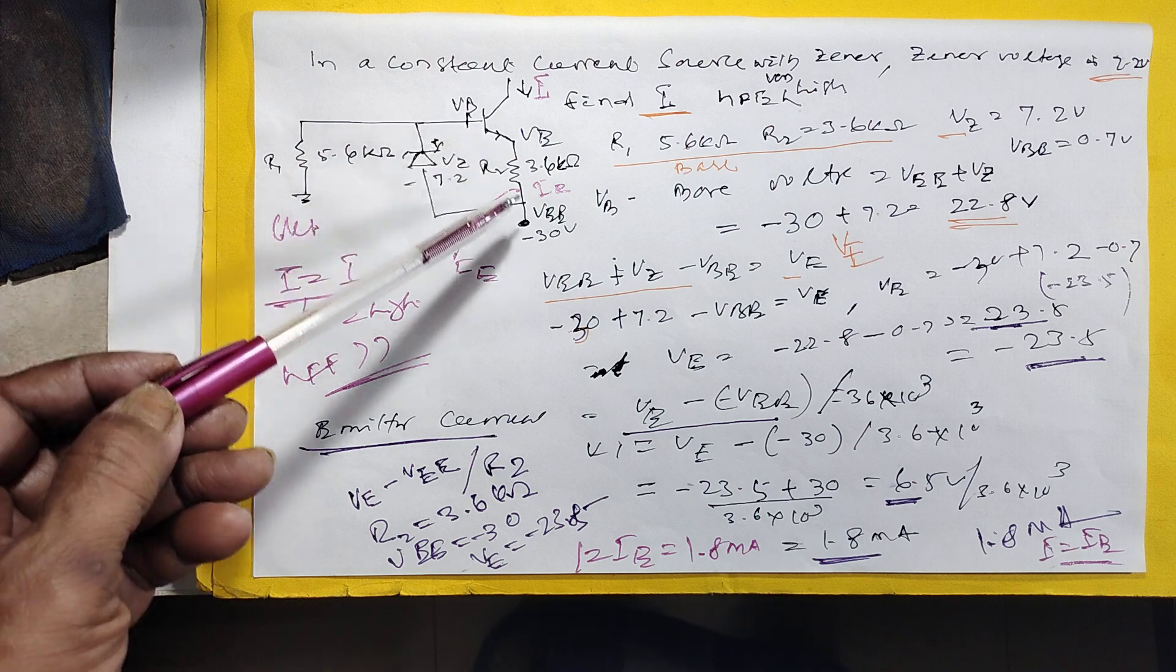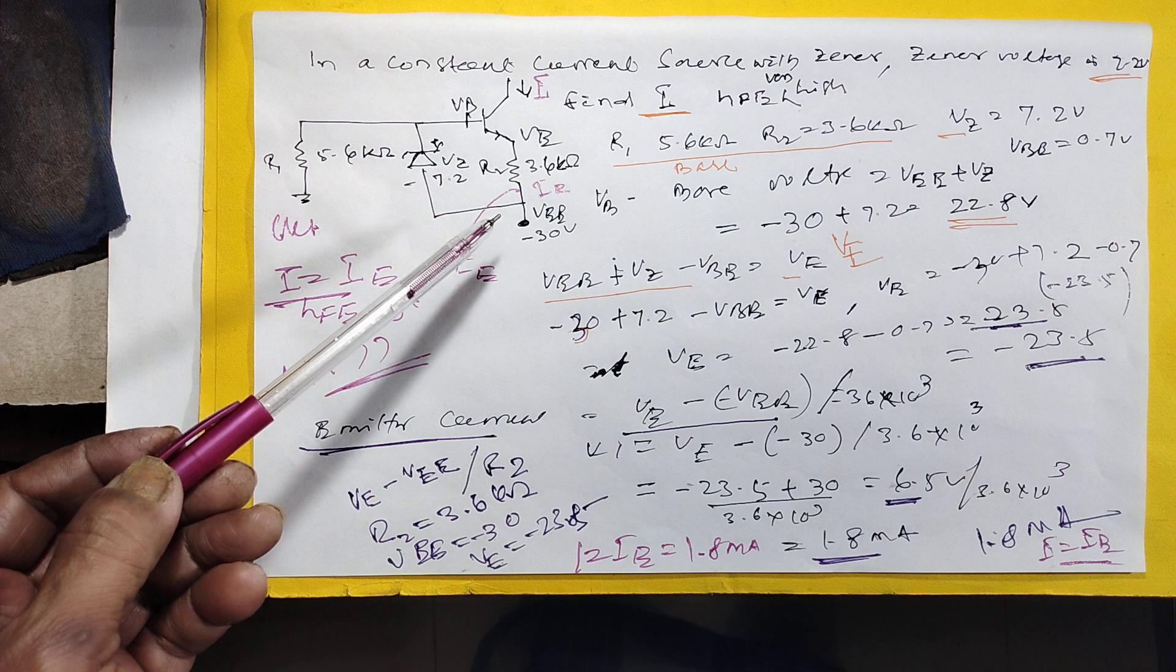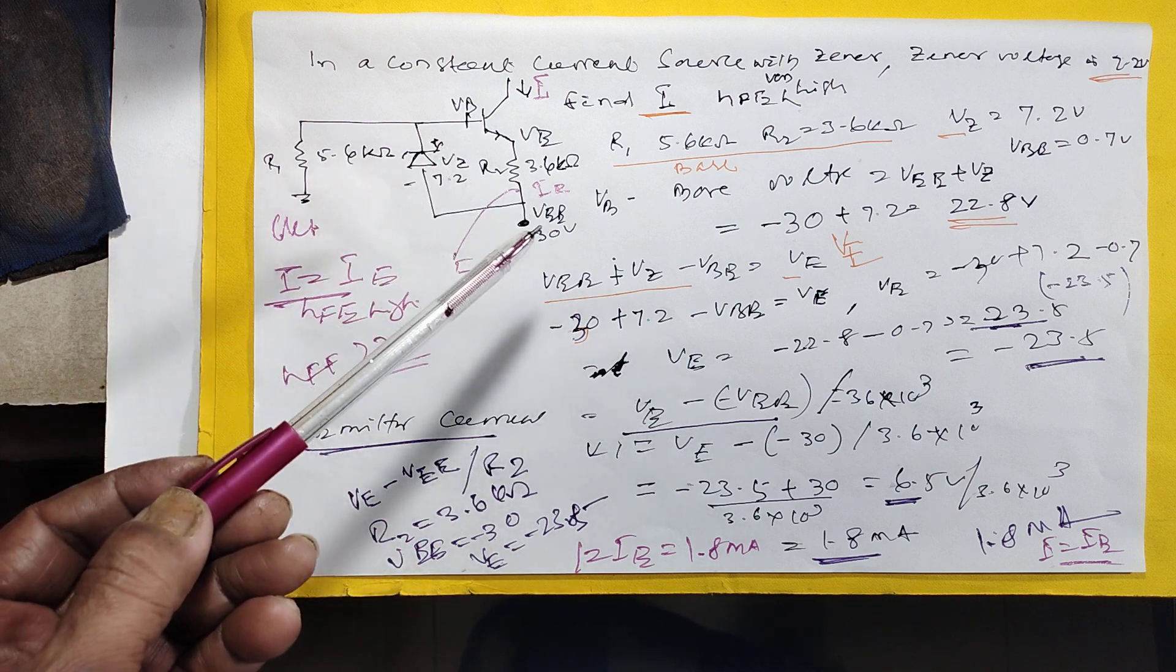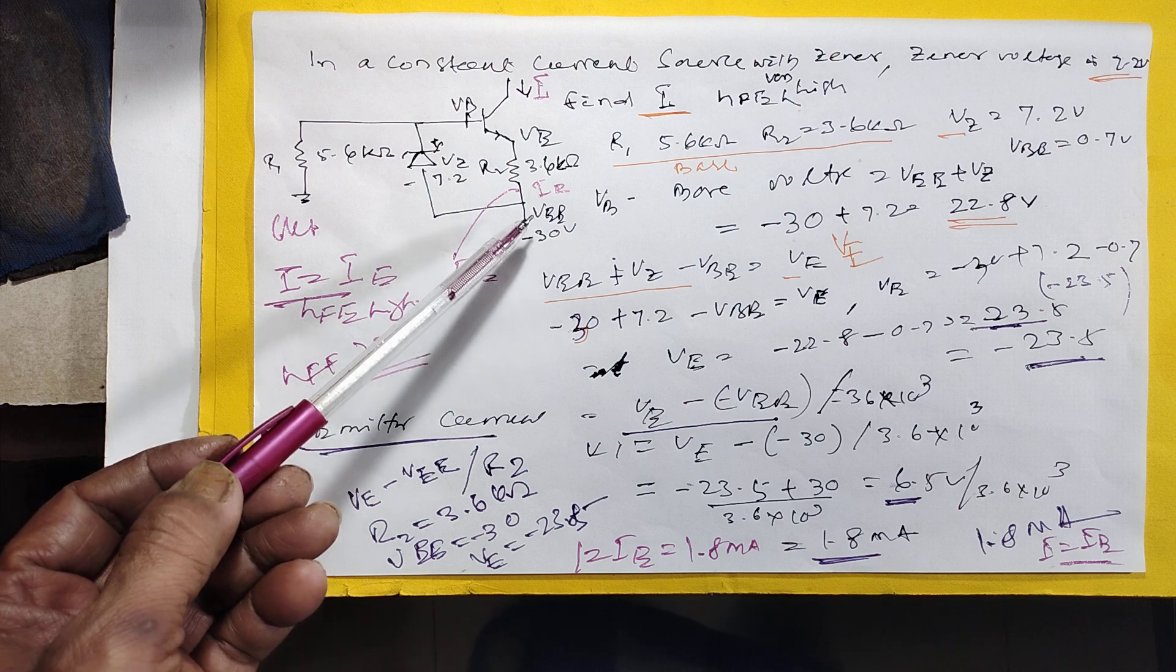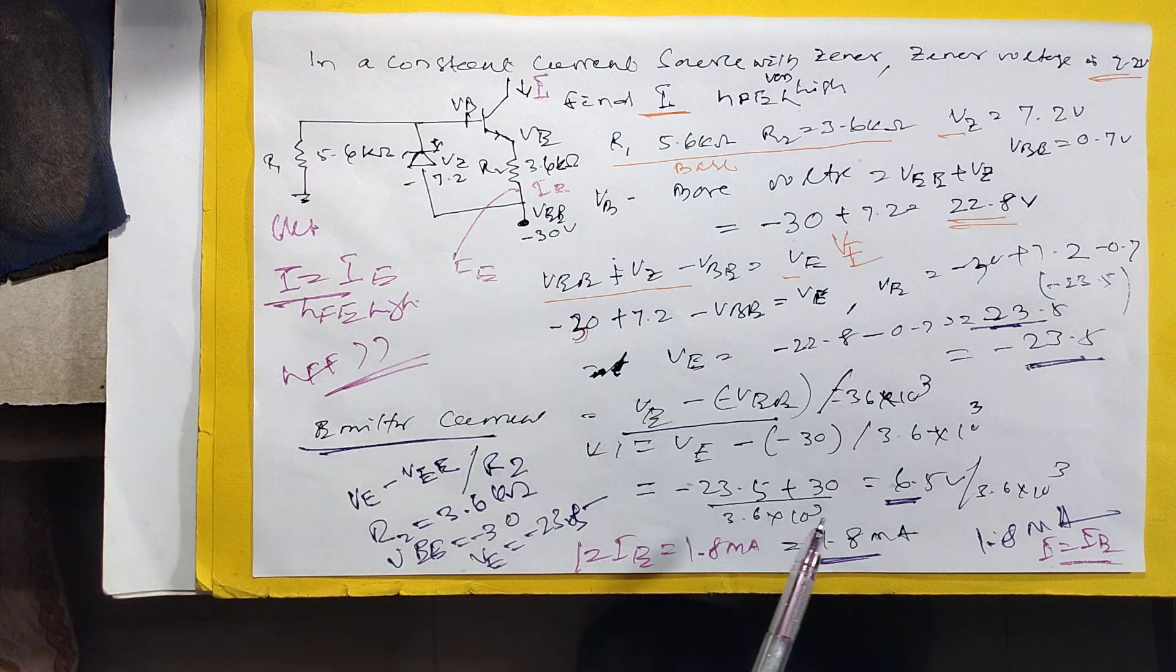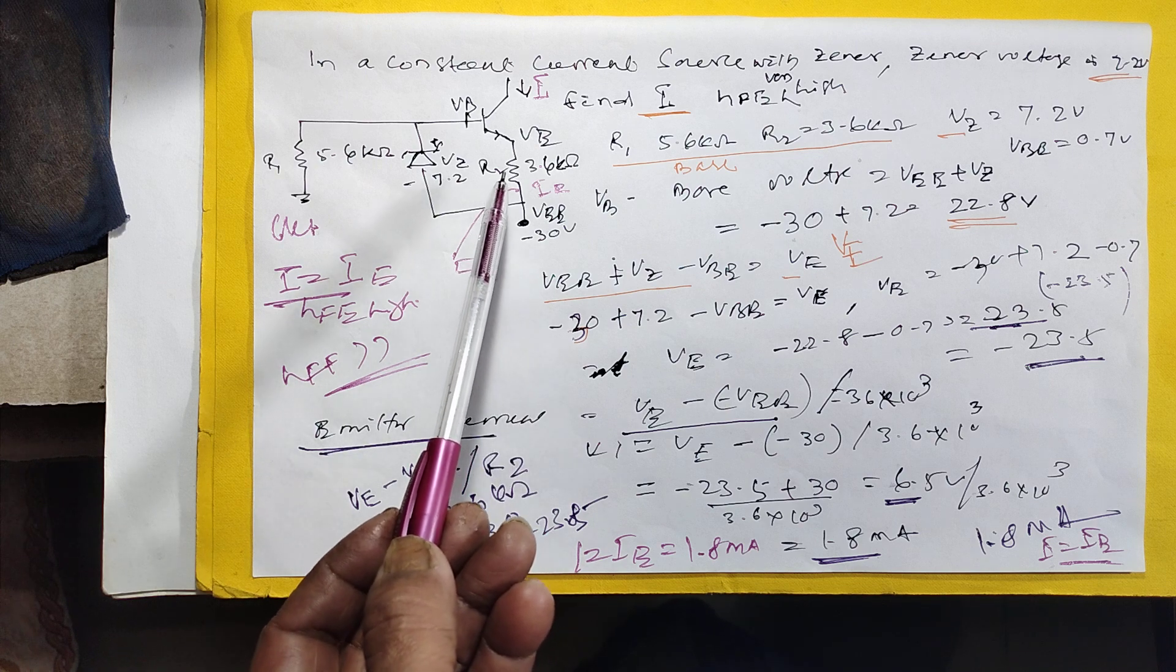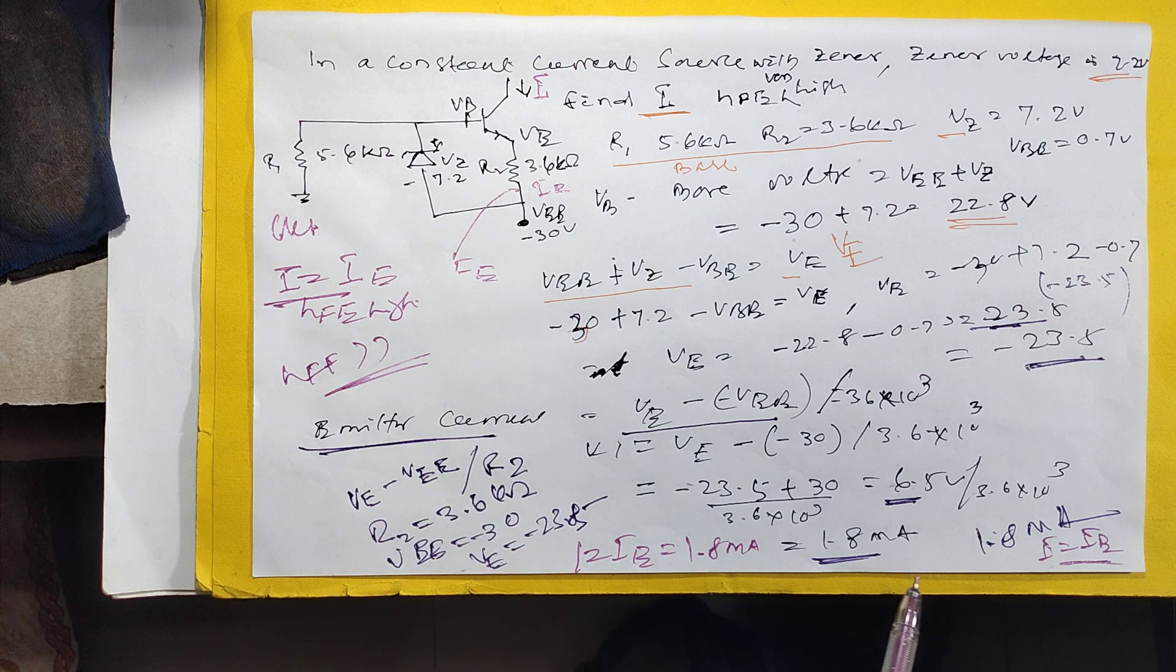VE minus VEE, it is minus 30. So if this is minus 30, VE minus VEE, but it is minus 30, it is coming plus. VE minus minus 30, if you solve it, it is coming. This is the resistance, 3.6 kilo ohm. It is coming 1.8 milliampere.